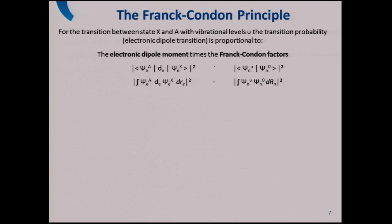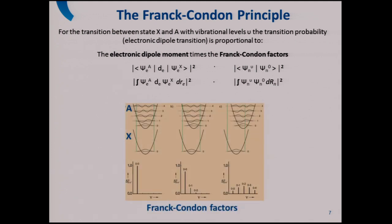When we absorb a photon, given these potential energy curves, what is this Gaussian profile — the wave packet? For this we need the Franck-Condon principle, which states that for transitions between different states X and A with vibrational levels epsilon, the transition probability is proportional to the electronic dipole moment times the Franck-Condon factors. The Franck-Condon factor is the squared overlap integral of the nuclear wave function in the target vibrational state and the starting state. This allows us to understand the shapes of UV absorption spectra, and is essential for understanding how a wave packet comes about.